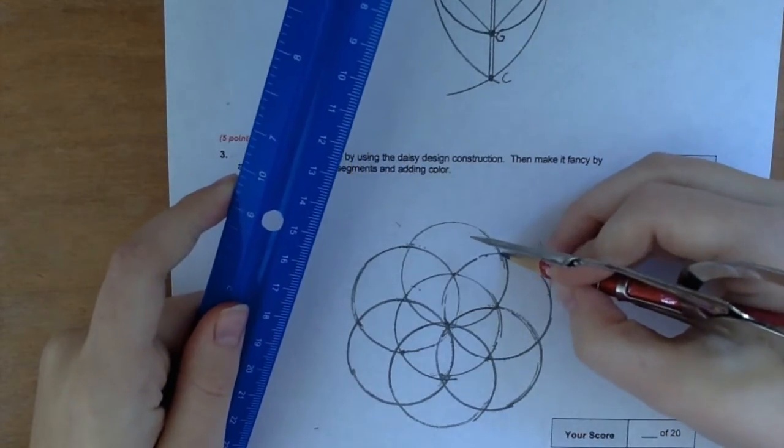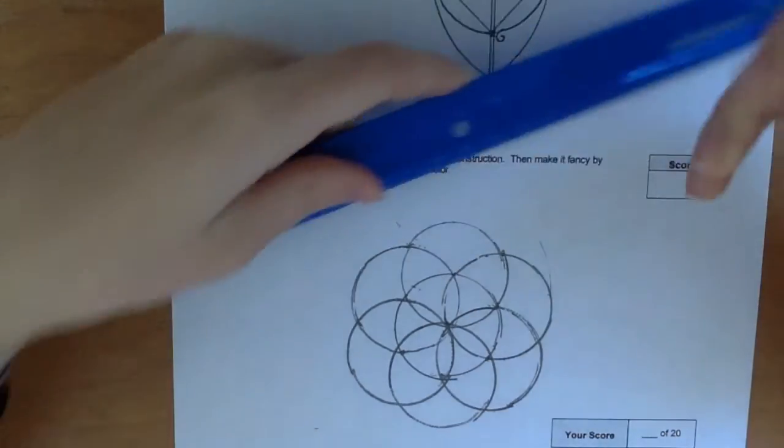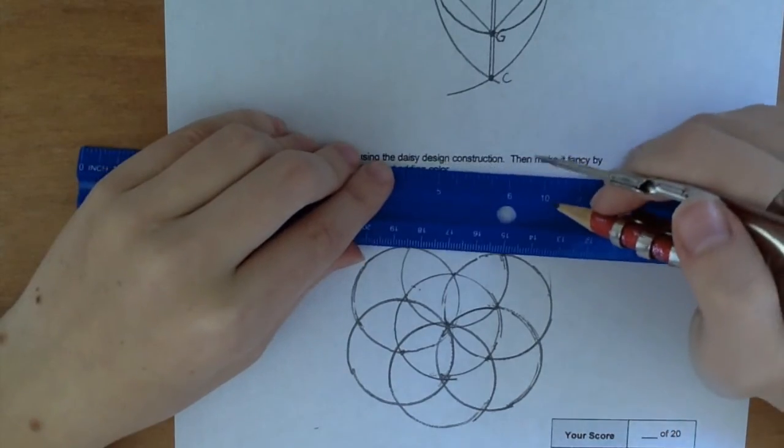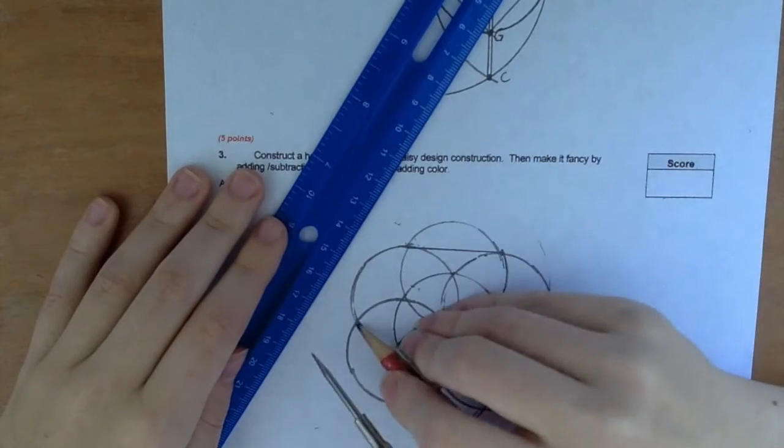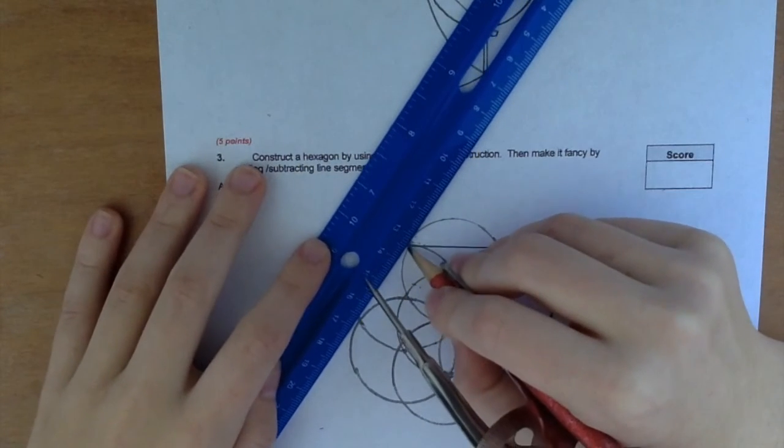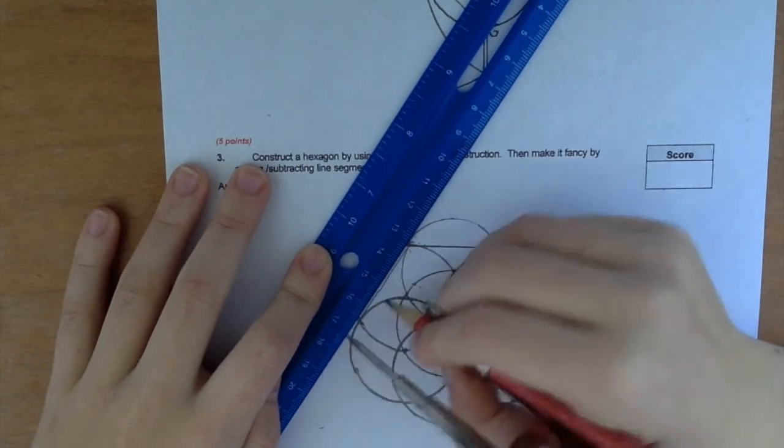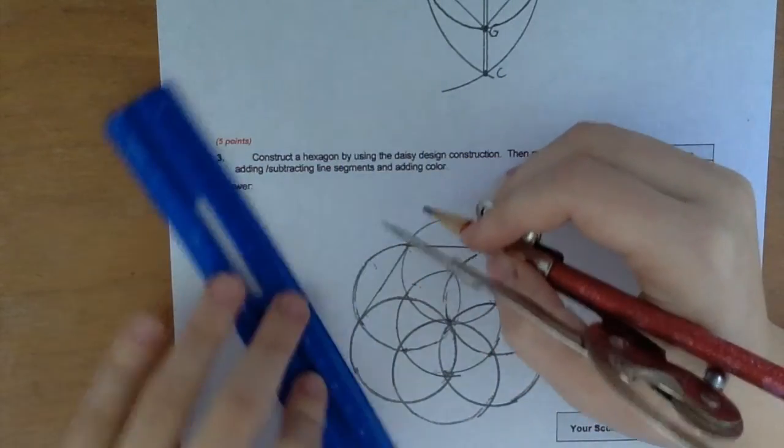So you see this little point up here and this little point right here, you draw a line between those. And then you see this line between this one and this one, you do the same. There's no line there but you make it, and then here.